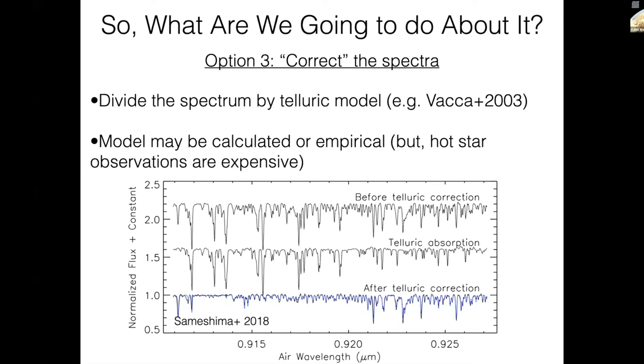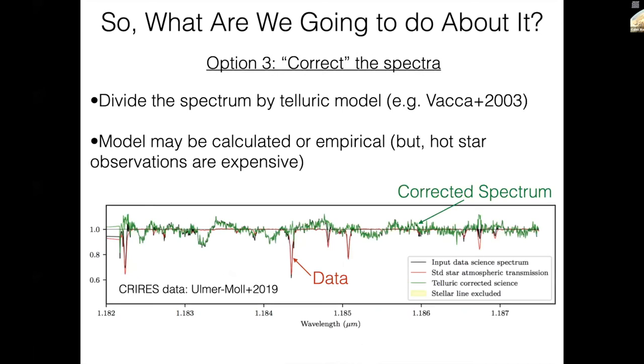Another thing you could do is try to correct the spectrum. This is an idea that goes way back in astronomy. The idea is I'm going to observe my science target with telluric lines superimposed on that spectrum. Then I'm going to point my telescope to some telluric standard, a hot star, similar in air mass, close in time. Then in some way, I'm going to correct that science spectrum. Maybe I'm going to divide it out. That correction could be an empirical observation—I'm going to observe a hot star. But remember, that takes very valuable telescope time, so that's not ideal. Or it could be a calculated transmission model of Earth's atmosphere. This is illustrated here at the bottom. You have a spectrum that's highly contaminated with telluric absorption on top. You have your telluric absorption model in the middle. You're going to divide the top by the middle to get a correction.